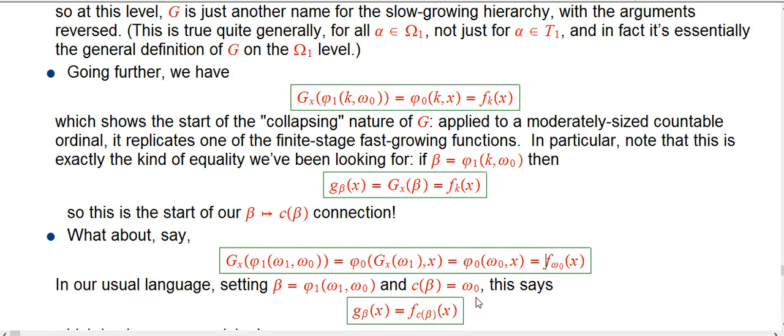That's phi naught of omega naught comma x, which is our new notation for the old friend, f sub omega naught of x.